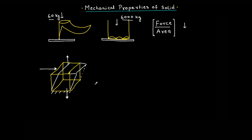The side will shift like this — it gets distorted. Another way is to compress it from all sides so that the volume decreases; for example, take a sponge and compress it from all sides. So there are three typical ways to deform a solid. Of course, in practice two or three kinds of deformation may happen together, but when studying we go through them one by one, and once we understand each, we can combine and analyze them.